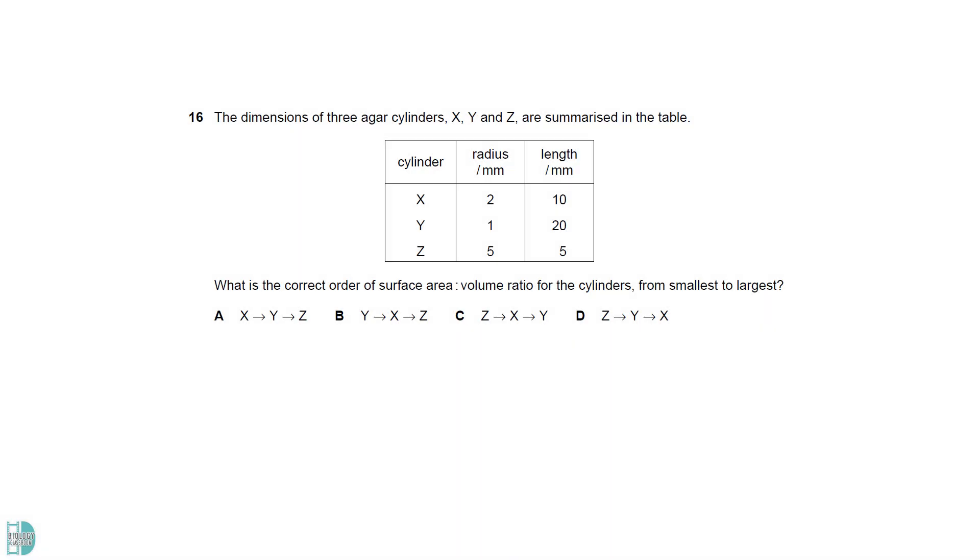The surface area of a cylinder can be calculated by 2πRH plus 2πR squared. The volume is πR squared H. If you want to be sure of the answers, you can calculate them one by one and arrange them accordingly. However, you can also just look at the ratio of length to radius to get the sequence.